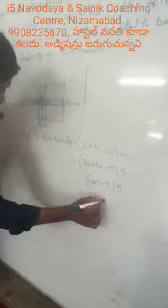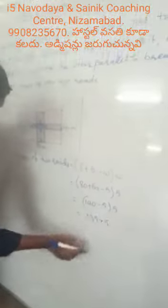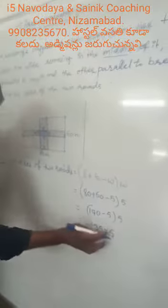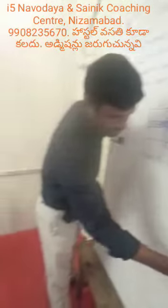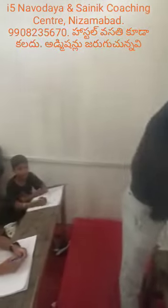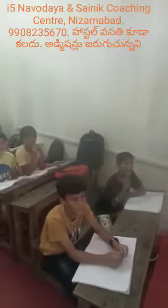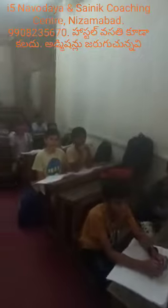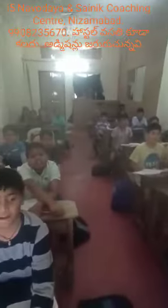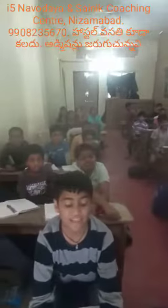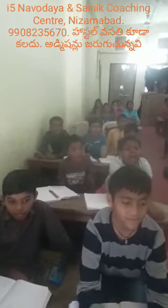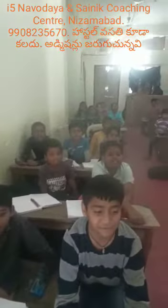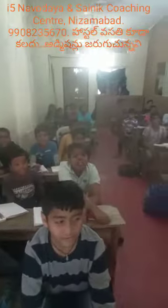135 into 5. 5 times 5 is 25, carry 2. 5 times 3 is 15, plus 2 is 17, carry 1. 5 times 1 is 5, plus 1 is 6.